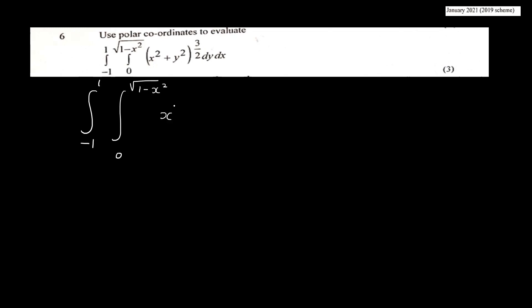Use polar coordinates to evaluate the integral from minus 1 to 1, integral from 0 to root of 1 minus x squared, of x squared plus y squared all raised to the power 3 by 2, dy dx.